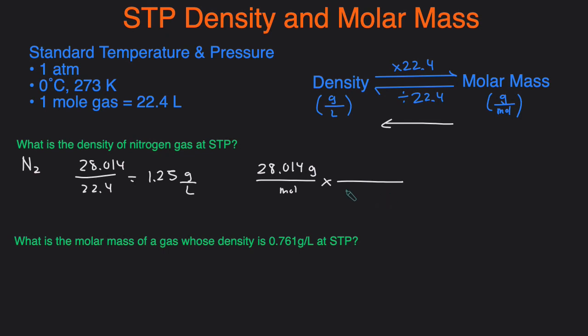We want to cancel out the moles so we put the moles on the top and then we put the liters on the bottom. In every one mole there are 22.4 liters and then that way the moles cancel out and you're left with grams per liter which is the units for density.